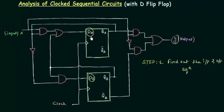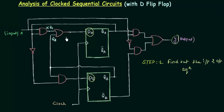Let's find out the value of DA. It is the output of this OR gate. One input to the AND gate is X, and the other input is QA, so the output of the AND gate is XQA. This XQA is now acting as one input to the OR gate, and the second input is QB. So overall my DA is equal to XQA OR QB.